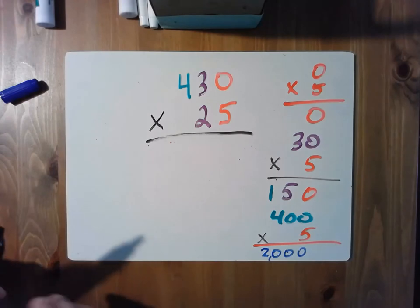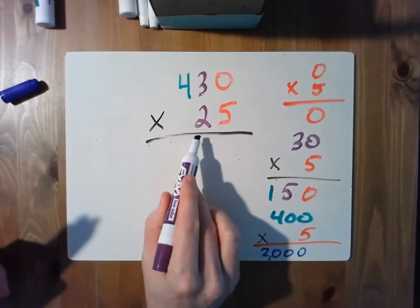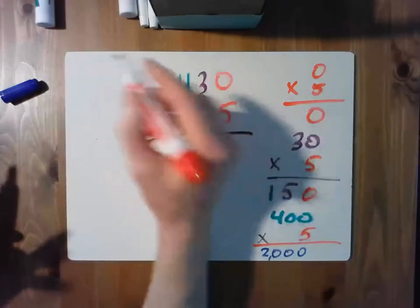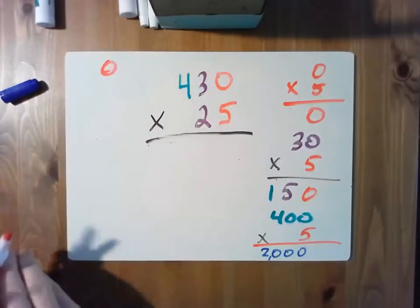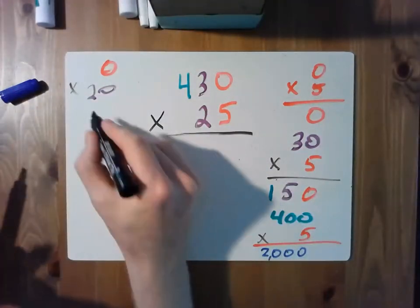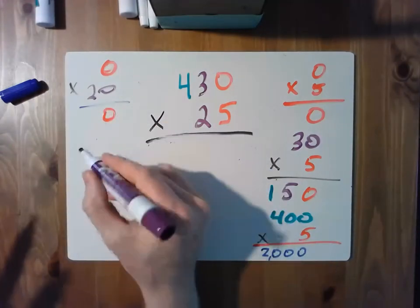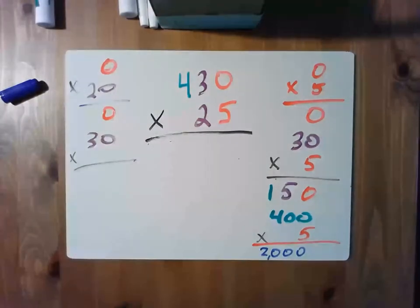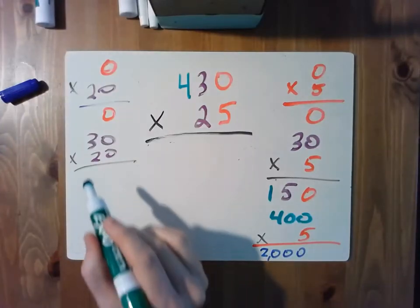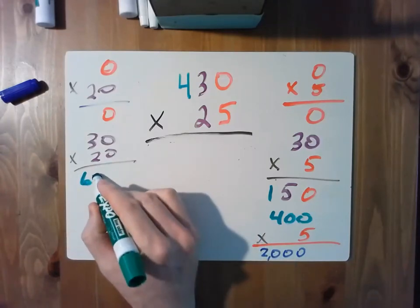Once we've done that, we want to multiply by the 2 in the tens column. 430 times 20. So the first thing we're multiplying is 0 times 20, and that equals 0. And then we're multiplying 30 times 20. I'll do my little trick here. 2 times 3 is 6, and then there are two zeros in the problem. 30 times 20 is 600.